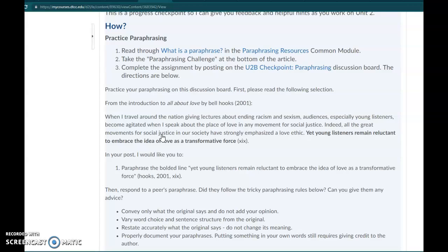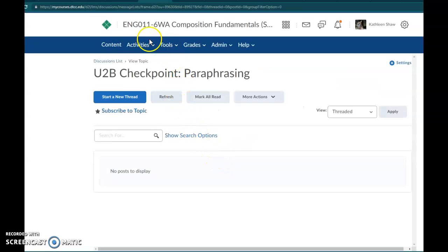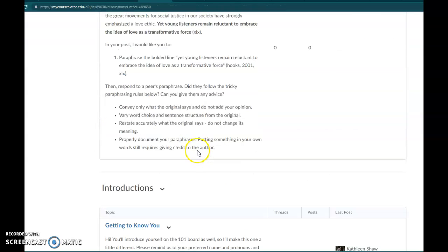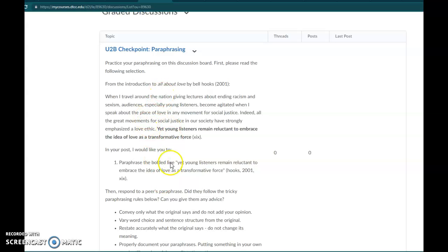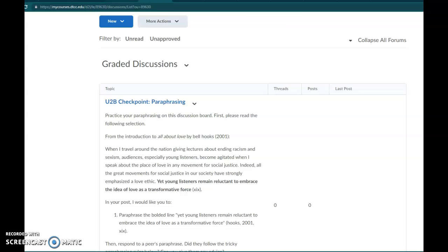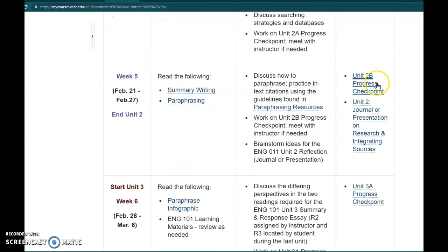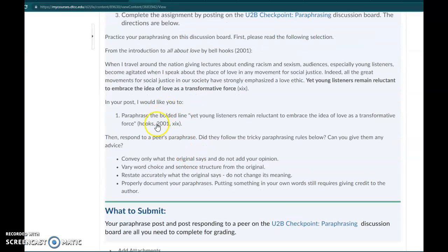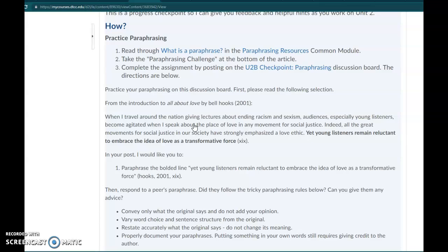Part number three says complete the assignment by posting on the Unit 2B Checkpoint Paraphrasing Discussion Board. If you click, it'll take you to this board. If you go back to the discussions list, you can see that the description is right here as well. What I want you to do is practice your paraphrasing. I pulled a quote from a book that I'm currently reading. I have this little passage, it's a couple sentences long, and the sentence that's in bold is what I want you to paraphrase. It's difficult to paraphrase something without any context, so that's why I included more of the paragraph.